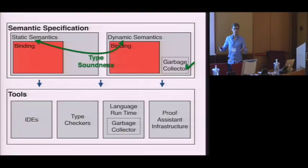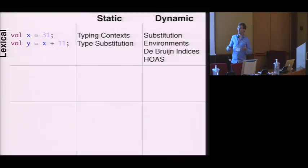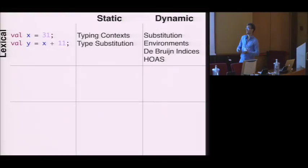So how is binding modeled in traditional semantic specifications? In a number of different ways. Here's a simple example with lexical scoping. The way we typically model binding in static semantics is by associating names with types, for example using typing contexts or type substitutions. And the way we model binding in dynamic semantics is by associating names with values, for example using substitution environments, de Bruijn indices, or higher-order abstract syntax.